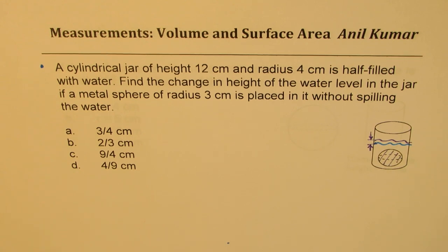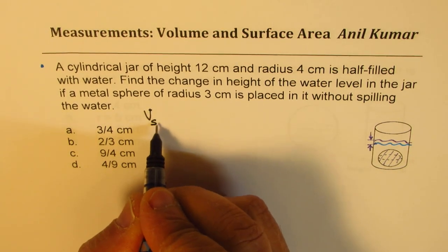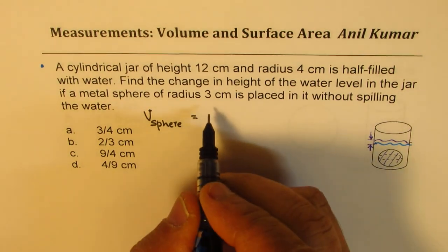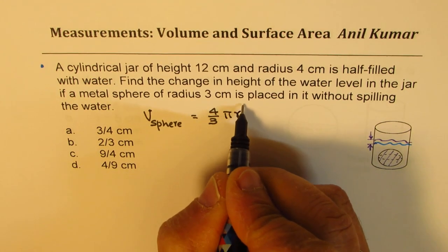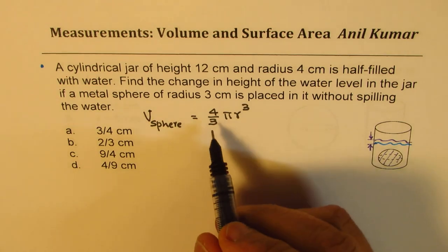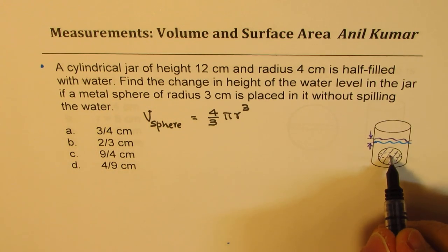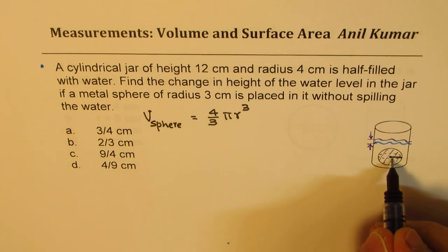The sphere has a volume which will be displaced by the water, and the height will increase. So first, we calculate the volume of the sphere. The formula is 4/3 π r³. The radius of the sphere is given as 3 centimeters. So the volume will be 4/3 × π × 3³.